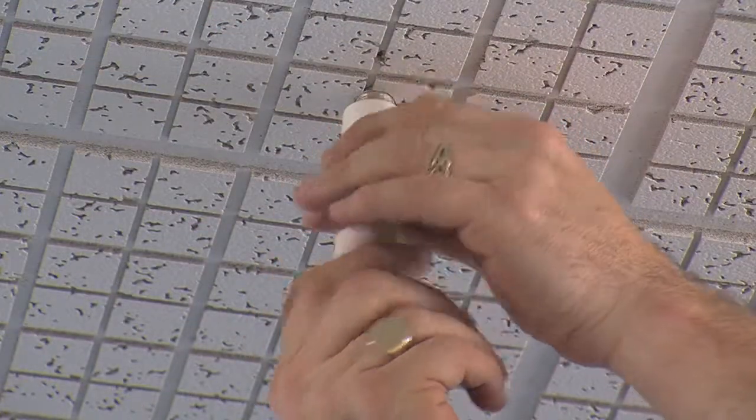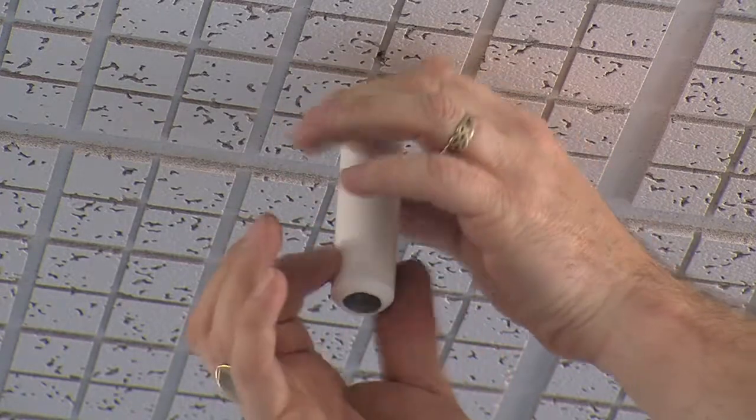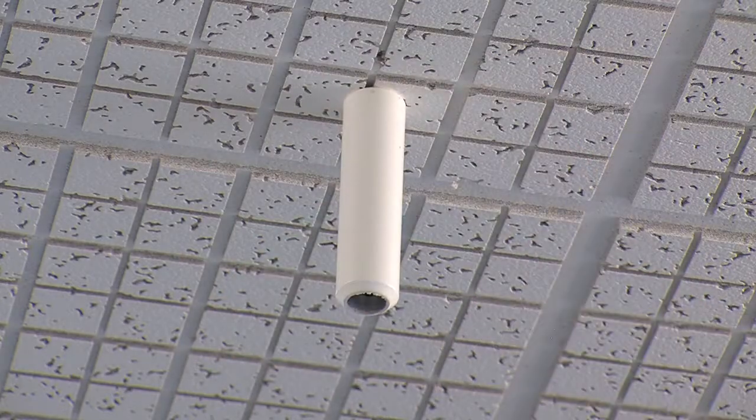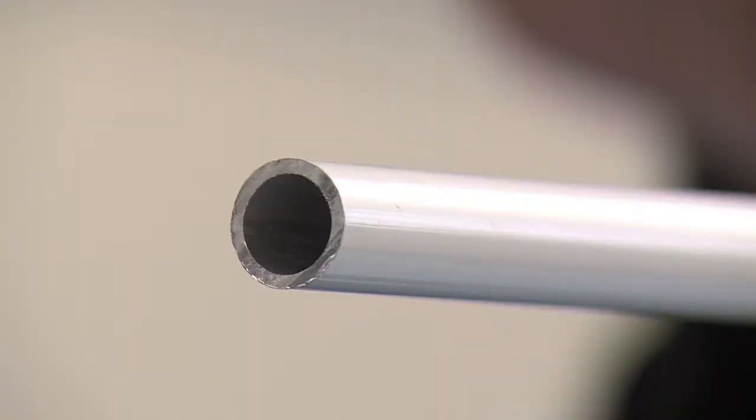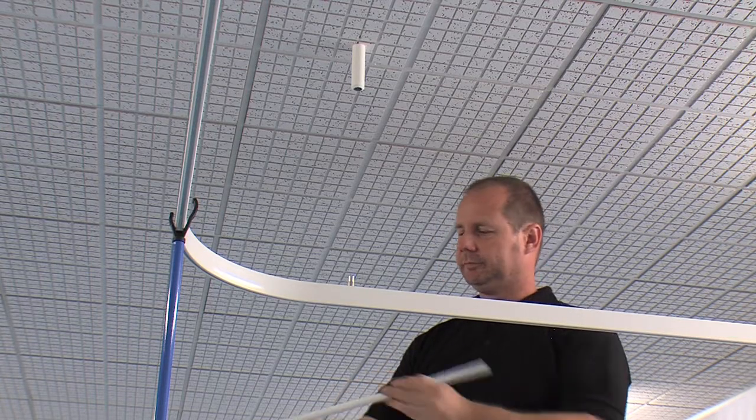And now it's time to fix the outer sleeve. Simply screw it on. The vertical support rod is supplied to be cut to size. Only one end is threaded. The trick is to make sure you do not cut off the end with the thread in it.